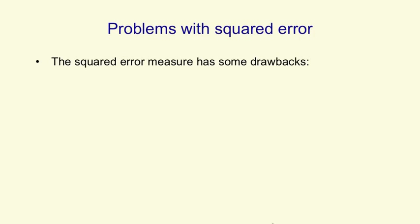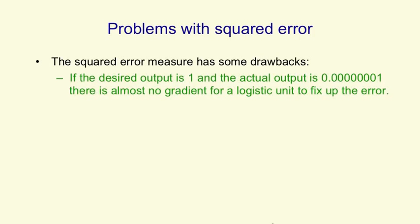But the squared error measure has some drawbacks. For example, if the desired output is a one — so you have a target of one — and the actual output of a neuron is one billionth, then there's almost no gradient to allow a logistic unit to change. It's way out on a plateau where the slope is almost exactly horizontal, and so it will take a very, very long time to change its weights, even though it's making almost as big an error as it's possible to make.